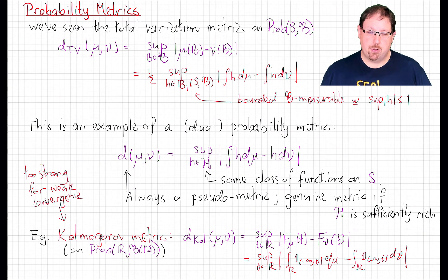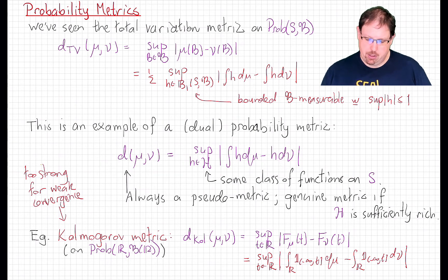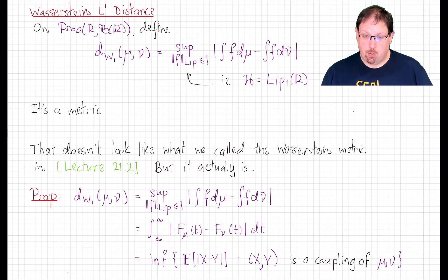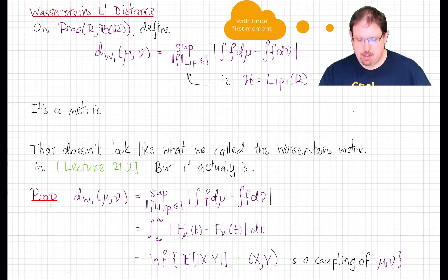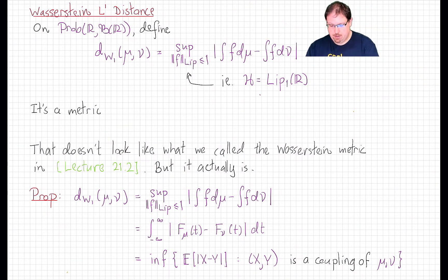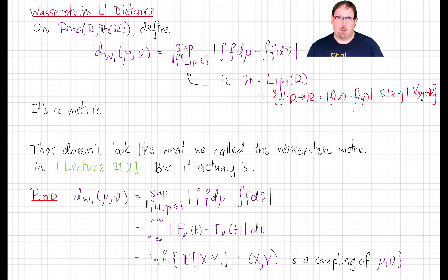I'd like to now introduce — or I should say reintroduce — another probability metric that is going to play a role in our deliberations in the next few lectures: the Wasserstein L1 metric. On probability measures on the real line, we define the following metric. It is a dual metric, dual to Lipschitz functions with Lipschitz norm less than or equal to 1. That means functions so that the ratio |f(x) − f(y)| / |x − y| remains bounded by 1 for all choices of x and y.